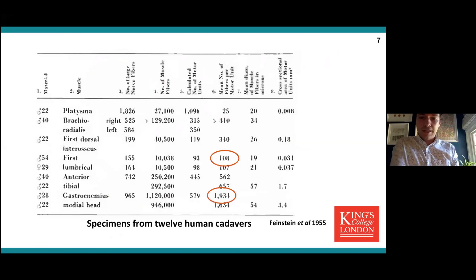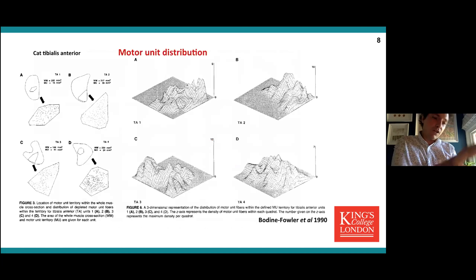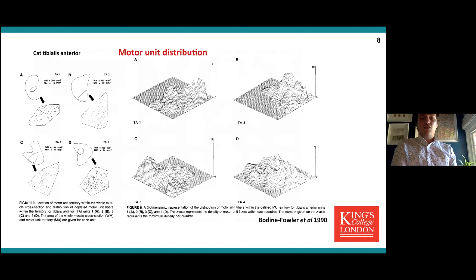Some very old data from human cadaveric samples shows the huge diversity depending on which muscle you're looking at in terms of the number of muscle fibers per motor unit. Also, relatively old data in cats shows that each motor unit works over quite a large surface area of the muscle, and there is variable distribution of muscle fiber innervation. So the knock-on effect of this is that motor units overlap.